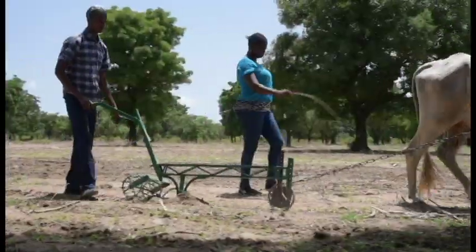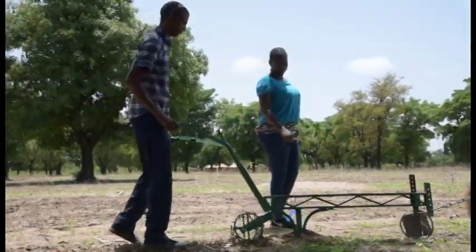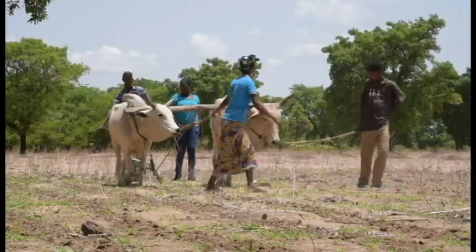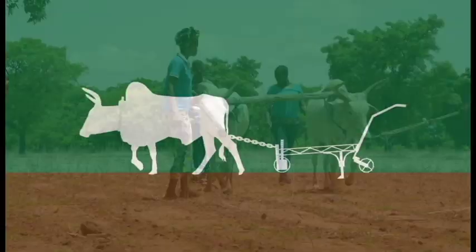Unlike a plow, you only pull the ripper in the line where you will plant seeds. The space between ripped rows is often as much as 80 centimeters, but will vary based on the crop and soil composition. As a result, the ripper reduces the time needed to prepare a field for planting.